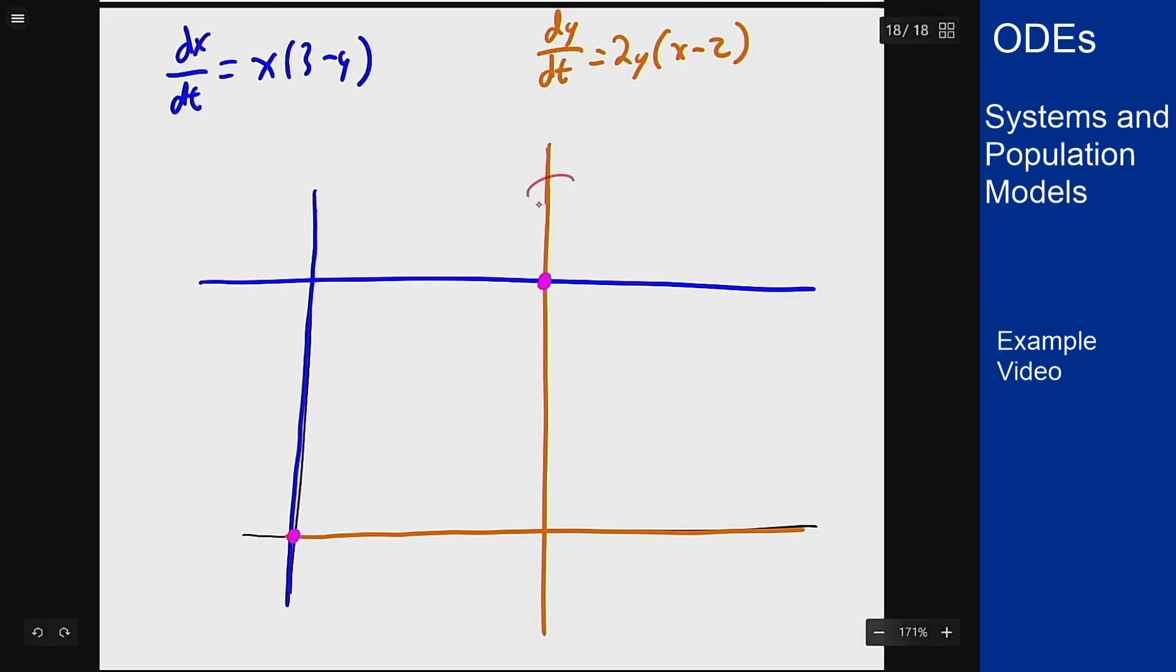Now if y is bigger than 3, then this 3 - y term here is negative, so my entire rate of change is negative. So if I am above 3, then my trajectory must be strictly to the left. And if I am below, dy is still 0, but now 3 - y is positive, so that's going to the right.